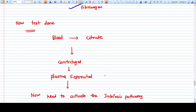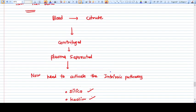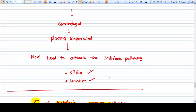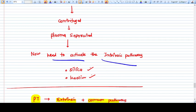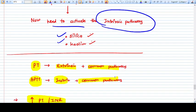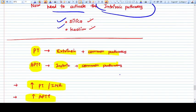How is the test done? Again the same thing - take the blood in the citrate vial. The citrate vial comes into the lab, centrifuged, plasma is separated. Now we need to activate the intrinsic pathway. To activate the intrinsic pathway, you need substances like silica and kaolin. Once you add silica and kaolin, it will activate the intrinsic pathway, and then we will see in how much time the blood clot is formed.